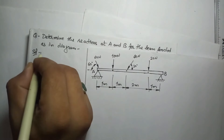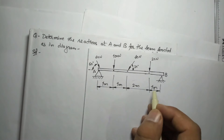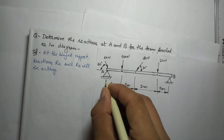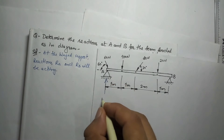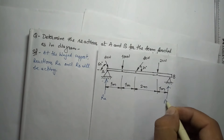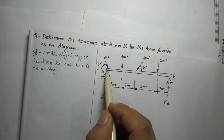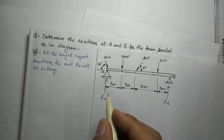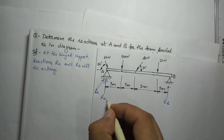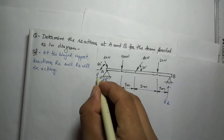There are two hinge points A and B, so there will be two reactions at points A and B — reactions Ra and Rb. At point A, the force is inclined, so the reaction Ra will also be inclined. Ra will have two components: Ra vertical and Ra horizontal.